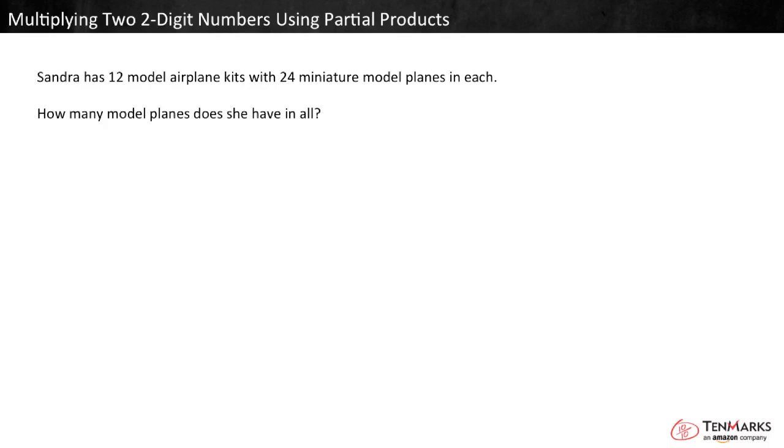We can use partial products to multiply two-digit numbers. Let's look at an example. Sandra has 12 model airplane kits with 24 miniature model planes in each. How many model planes does she have in all?